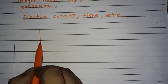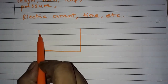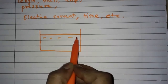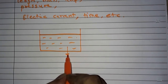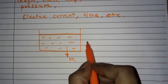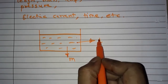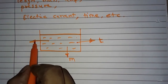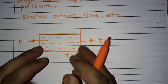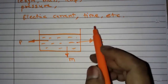Suppose friends, this is a container of negligible mass, and it has some fluid here. This fluid has some mass m. This fluid has some temperature T, and there is pressure which this fluid applies on the wall of the container.